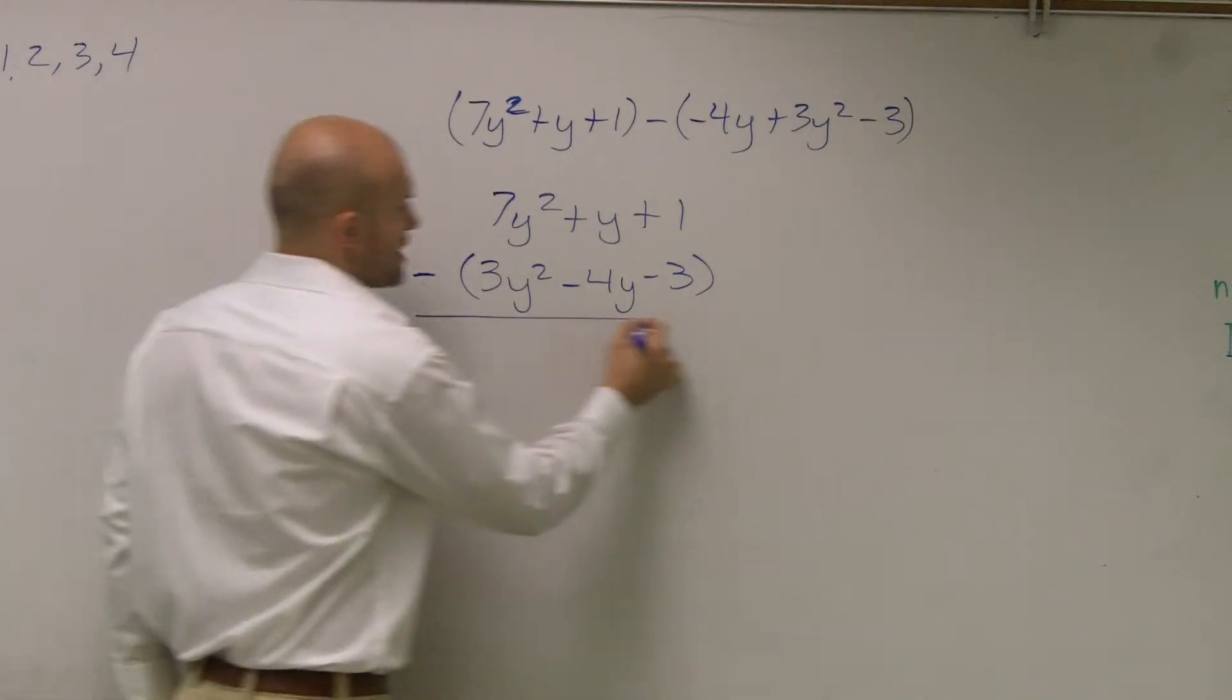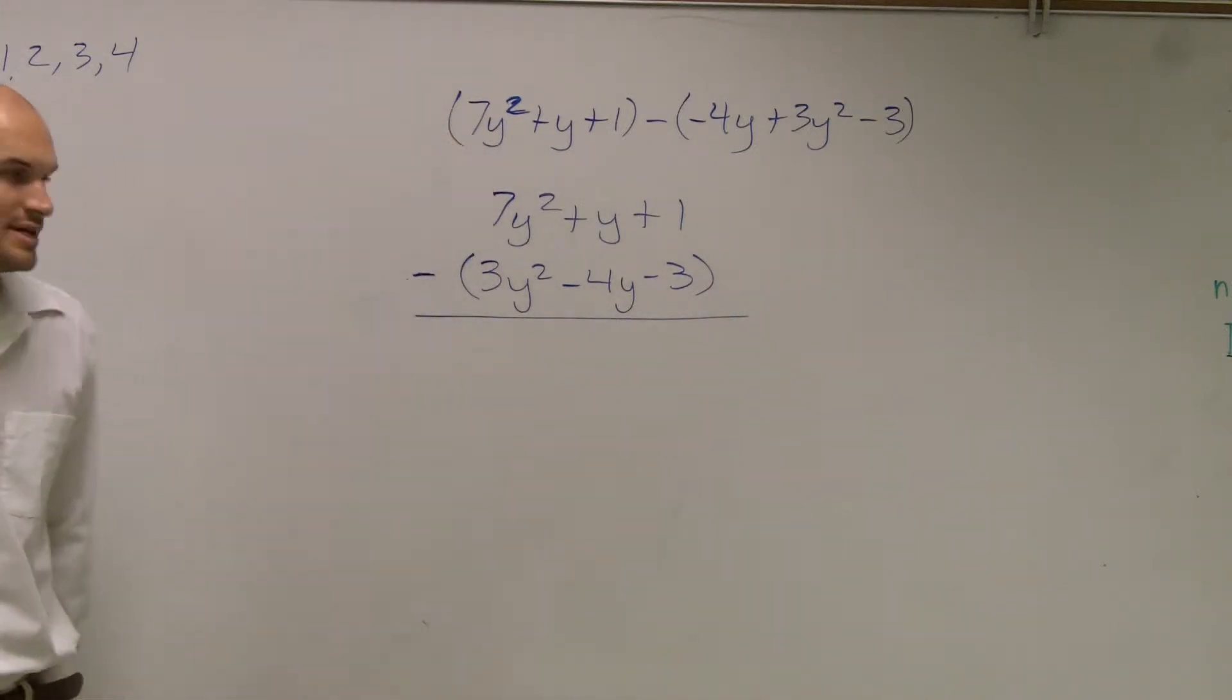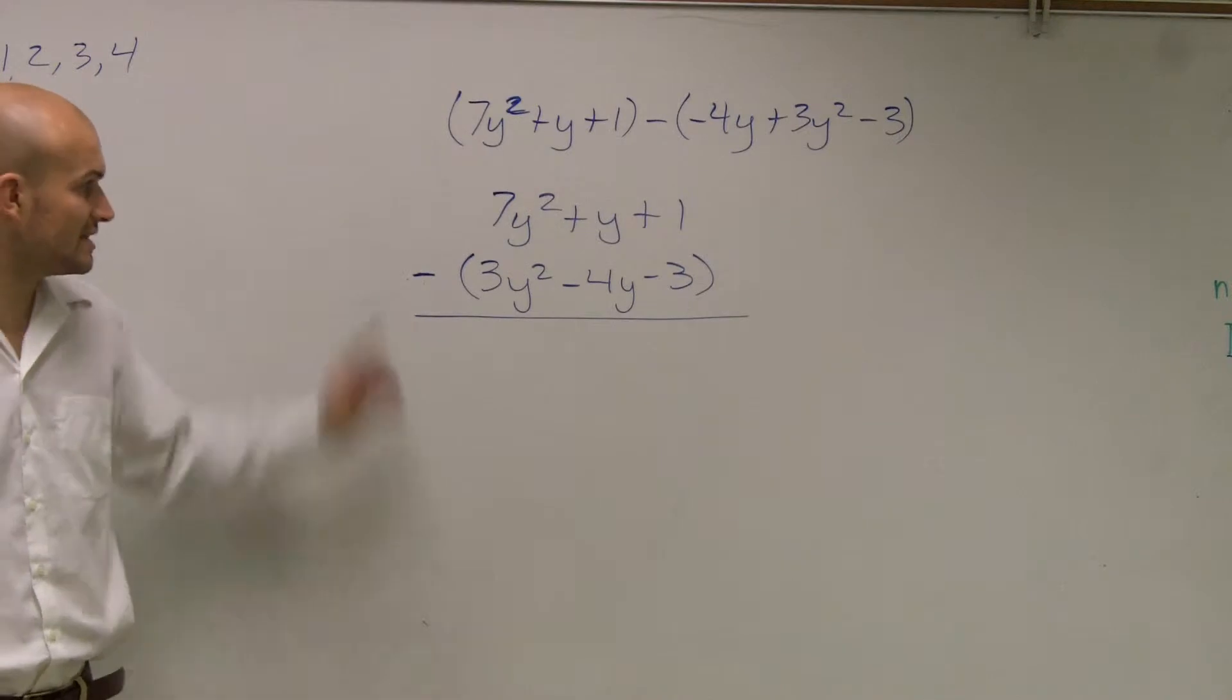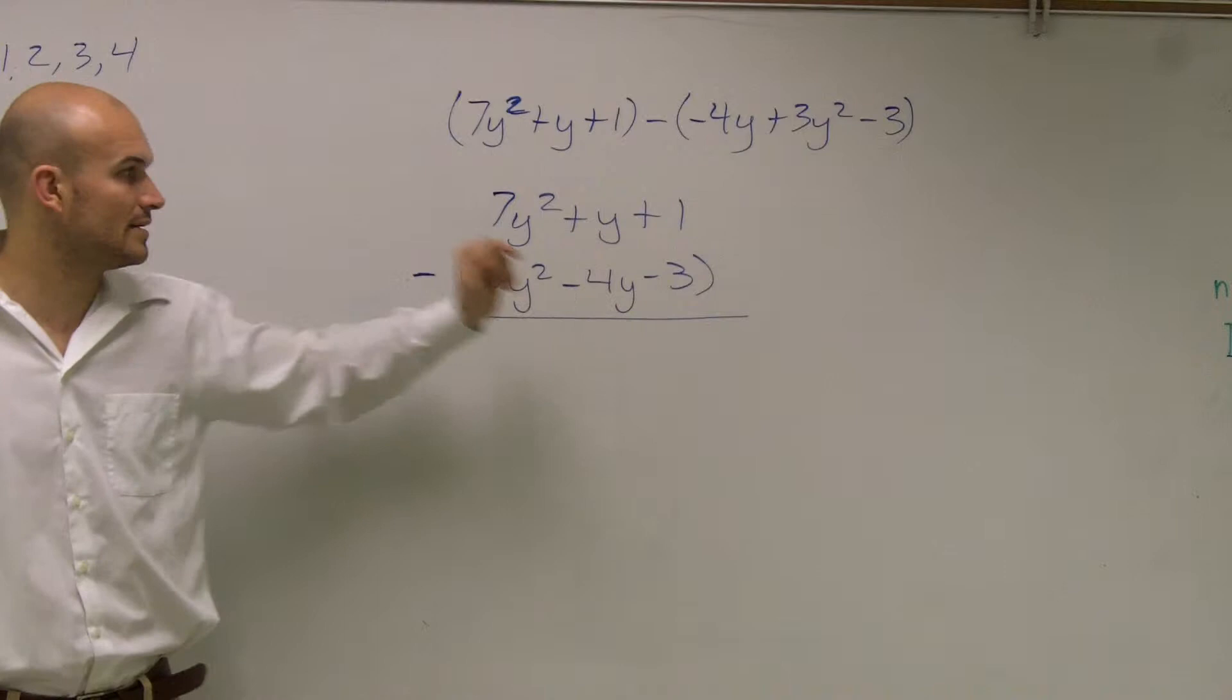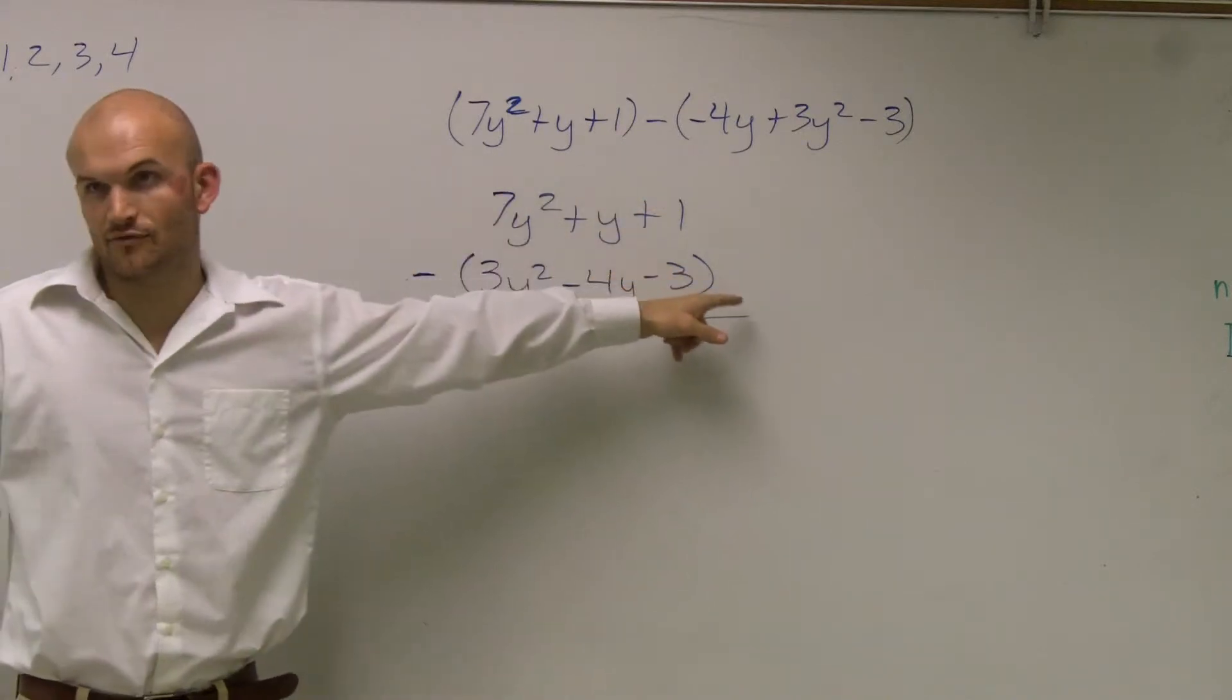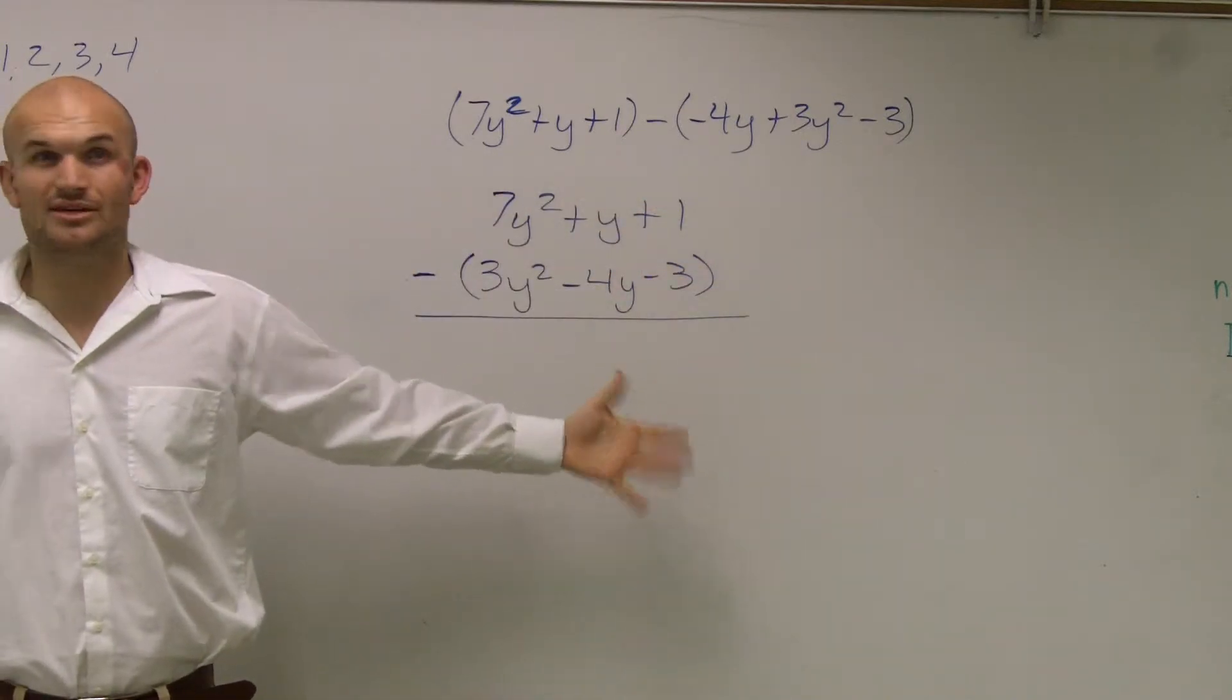Now, remember, you're subtracting that. Now, there's two ways you guys could do this. You guys could do it just like this. Say 7y squared minus 3y squared. Here, y minus negative 4y, 1 minus negative 3. That's fine. There's no problem with that.